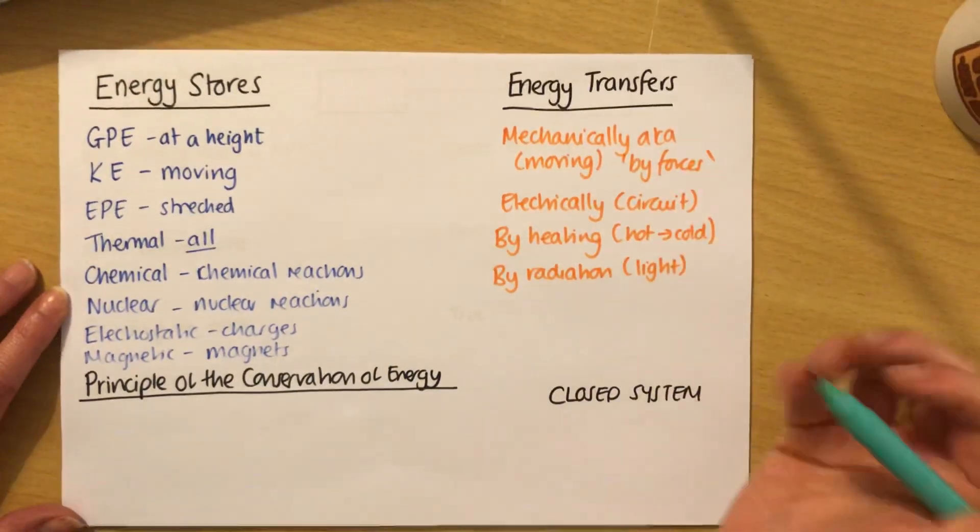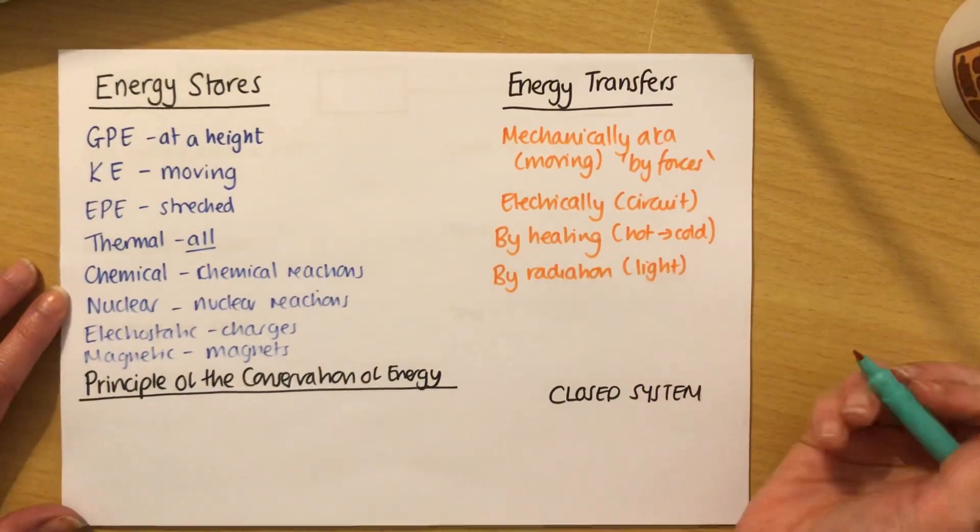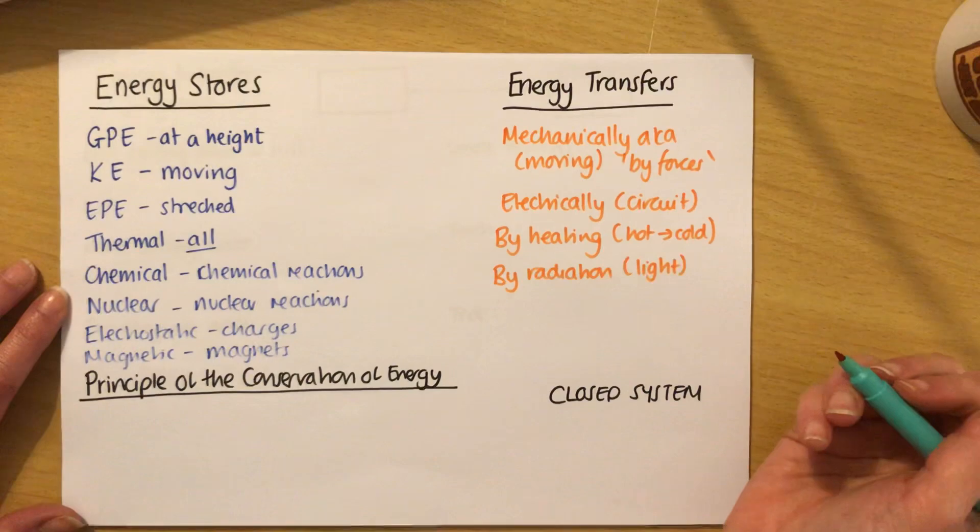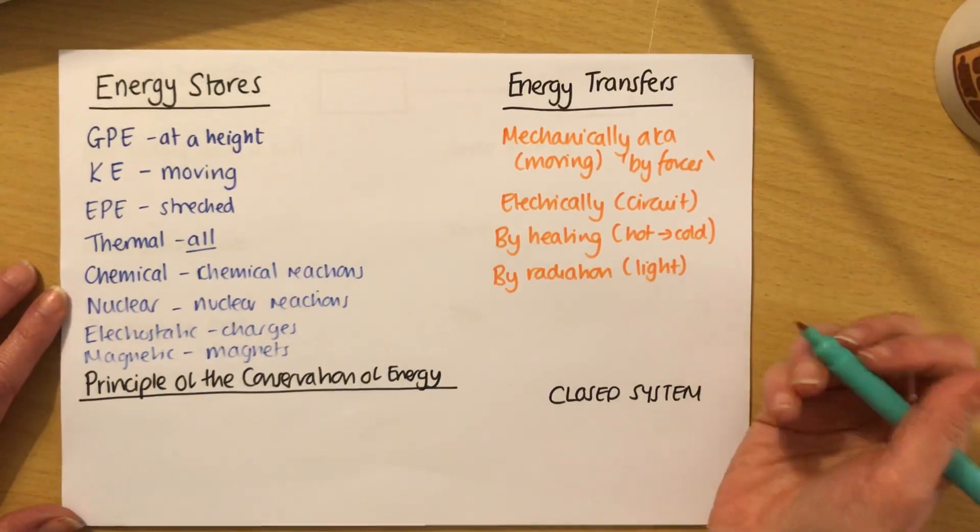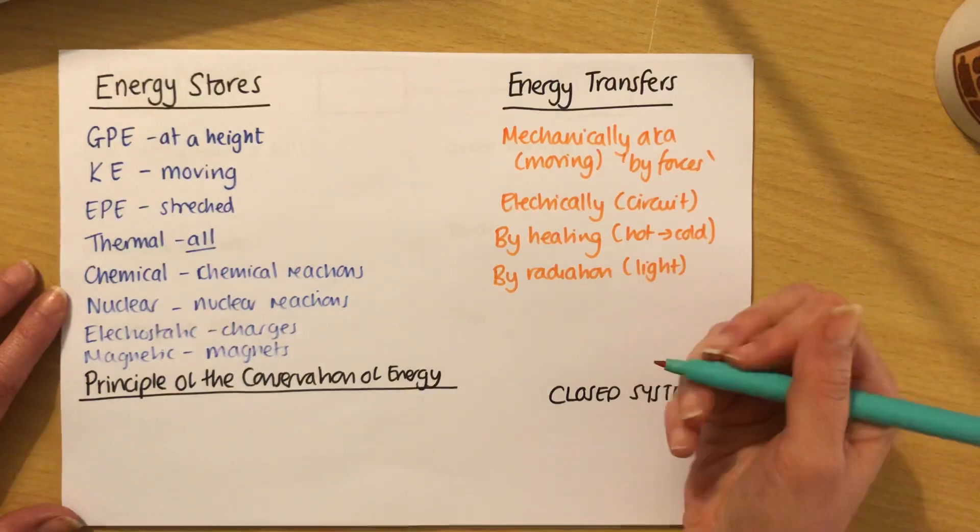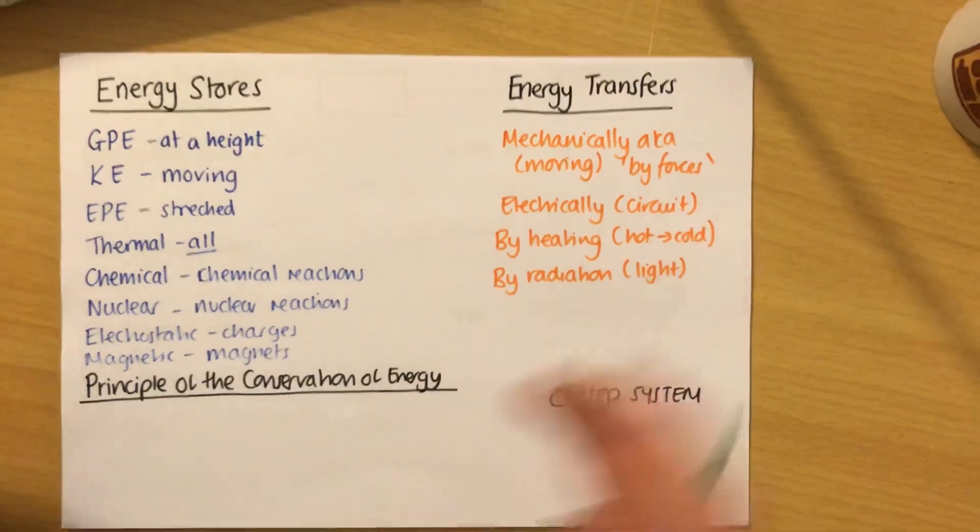Now these four things here, these aren't energy stores. You cannot store energy as light. You can't store energy as electricity. You can't store it as heat. But you can transfer it that way. Think about it. If you opened a bag, you couldn't have a bag of light or a bag of electricity. It doesn't work. It's too transient. But it can transfer the energy that way.